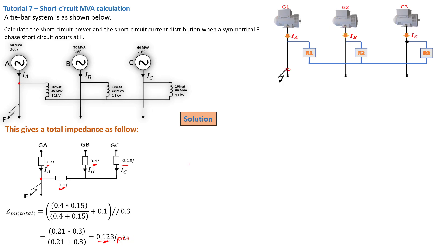So that is your 0.123 J per unit. Now that we've got our total per unit impedance, the next thing is to find the short circuit current. We are following the current path: IC is going this direction, then combining with IB. So the two currents IB and IC are going to combine at that point, cross the reactor, and combine with IA to give us a total per unit current.